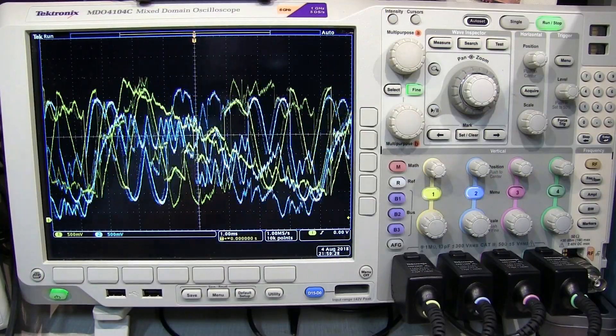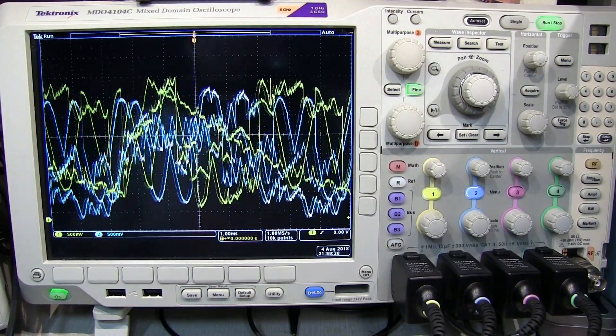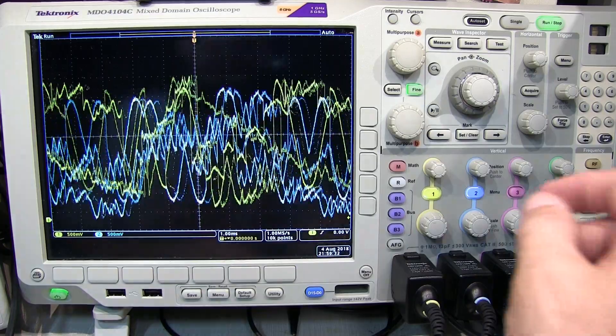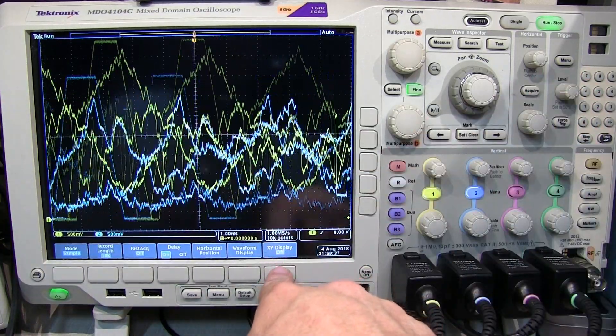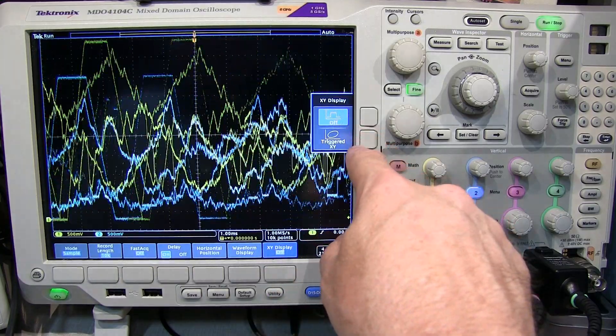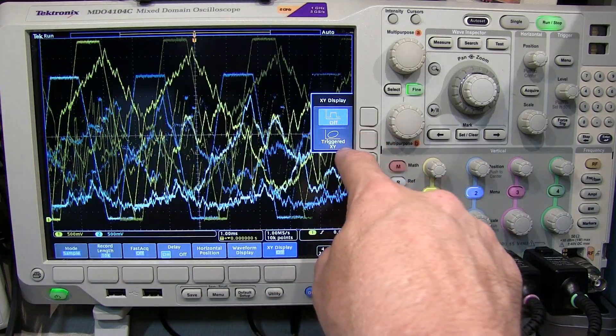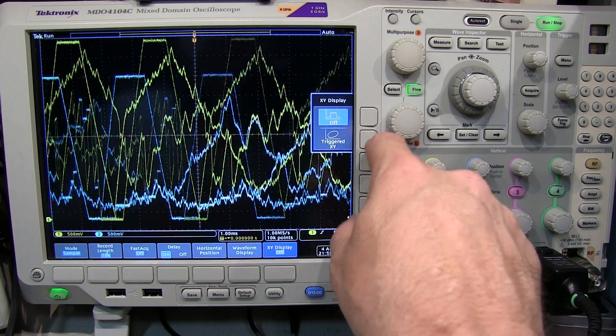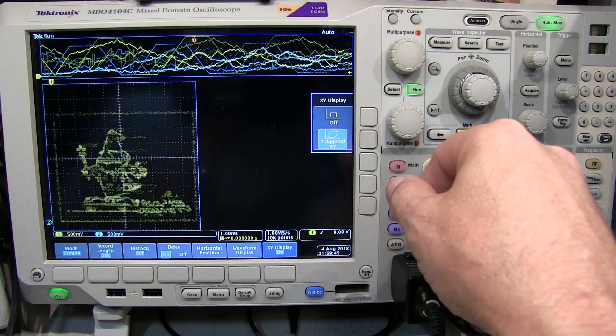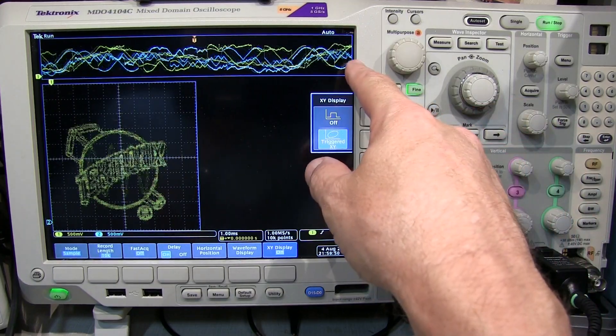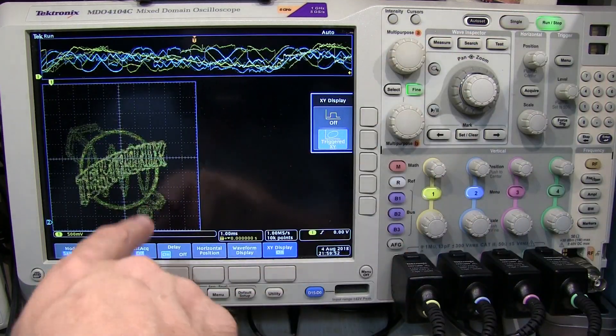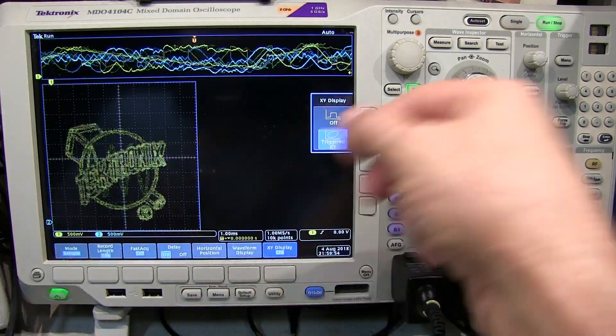Let's try this MDO4000 series scope and see how well the XY mode works on this. So we go to the Acquire menu, go to the XY mode and turn XY on. Now you'll notice it says Triggered XY, because the way this scope works, instead of kind of randomly triggering like the TDS2000 did, this one will actually trigger on the data. So we can already see we're getting a little bit better response here.